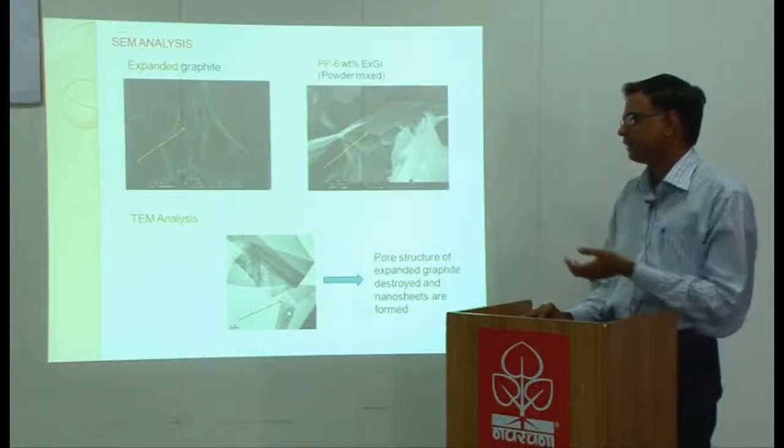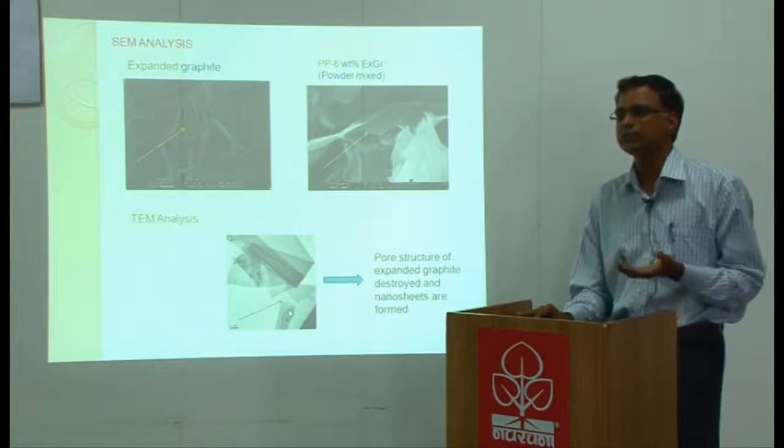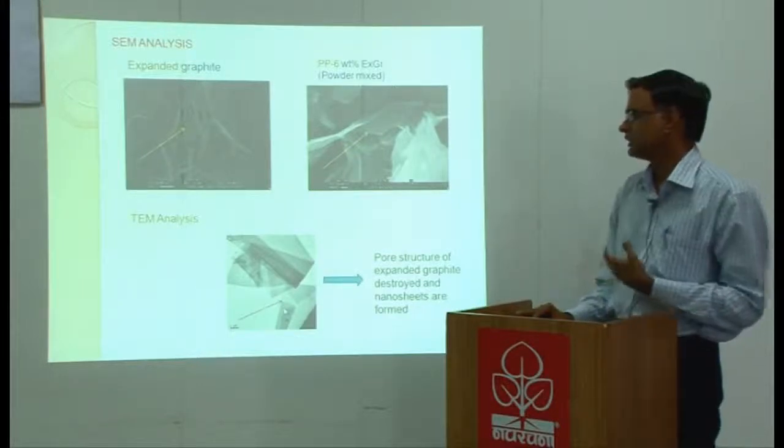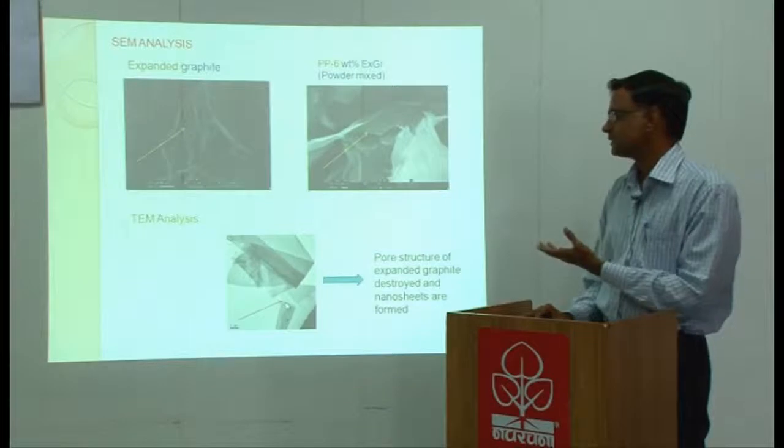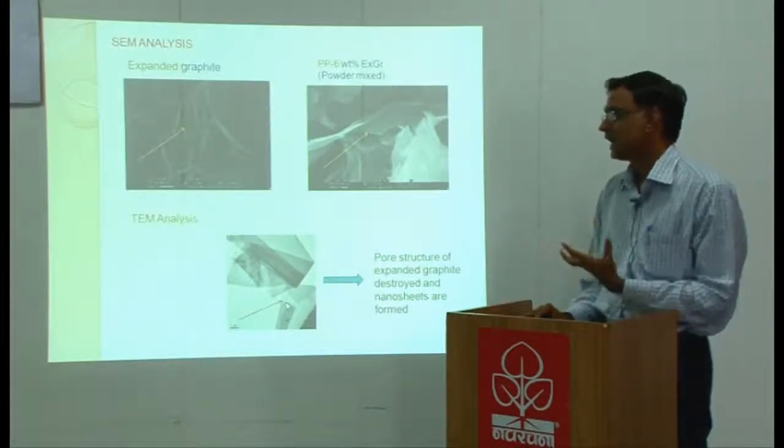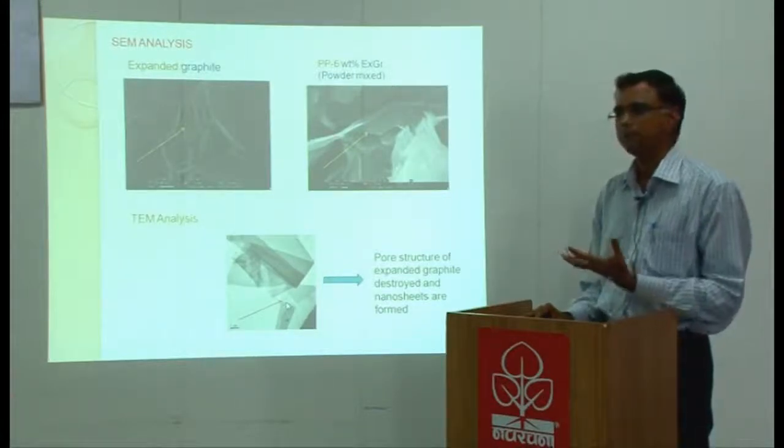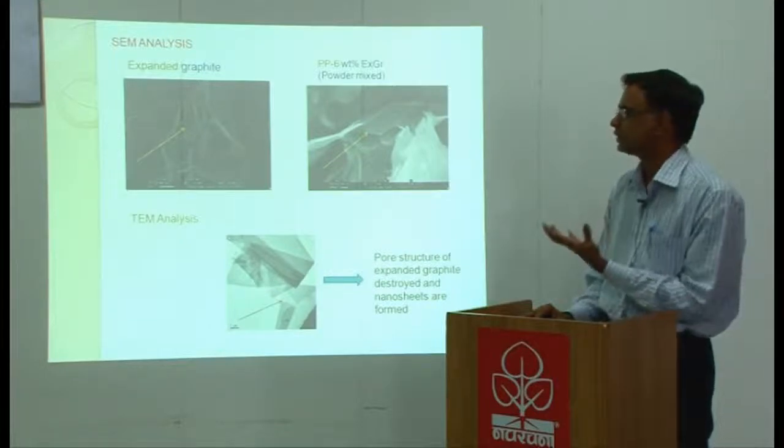We get few layer graphene which is not quite easy to make. This process which we opt results in high aspect ratio filler which eventually is used for reducing electrical percolation threshold.